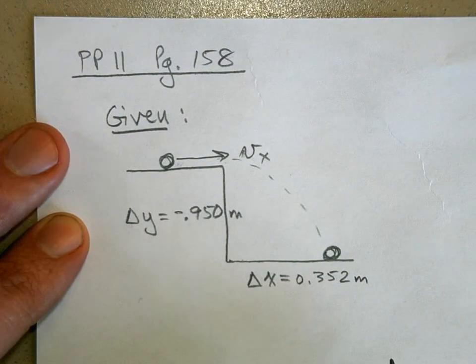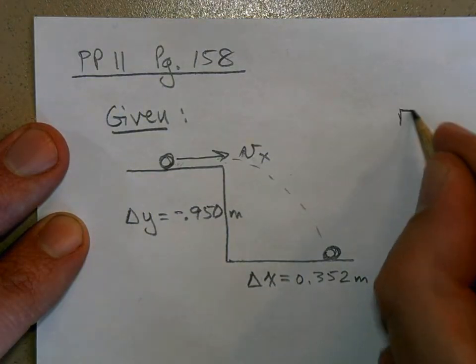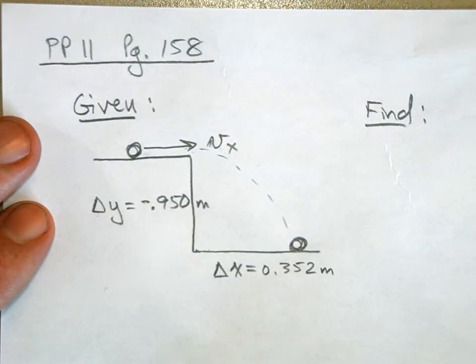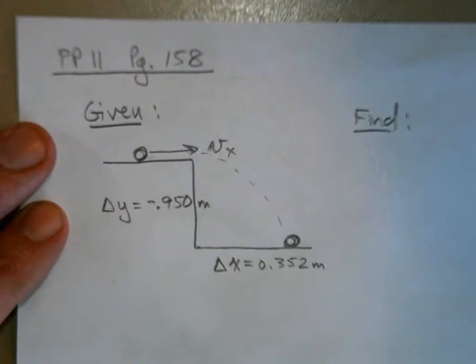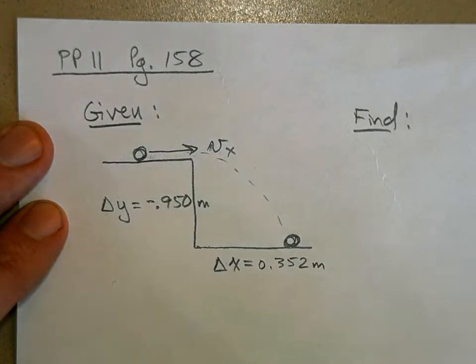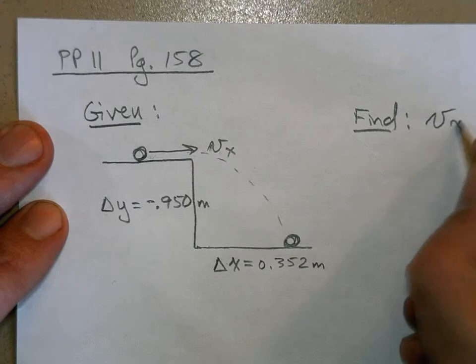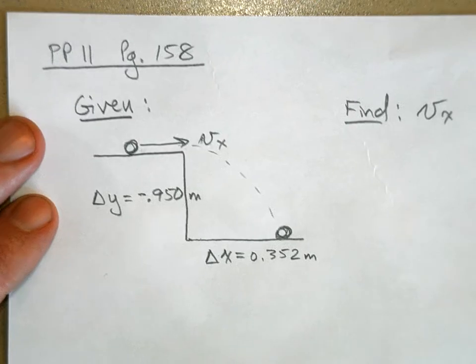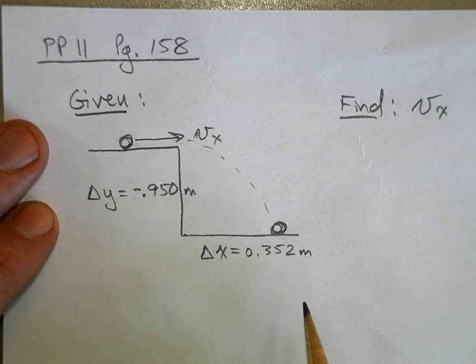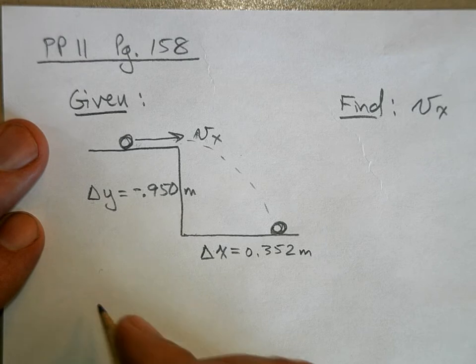Okay, and this is what's given and what we're trying to find. How fast was the ball rolling? So we're going to try to find Vx. This is a great way to start the problem: draw a picture of it and show what's given around your picture.